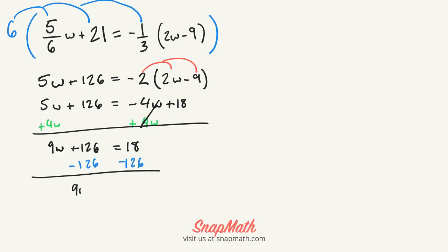9w equals negative 108. Then we're going to divide by 9 on each side. And w equals negative 12.